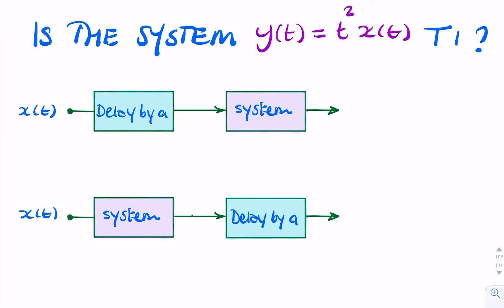So if x of t is delayed by a seconds, what we have as an output is x of t minus a. And if that then goes into my system, we can find the output by replacing all references to t with t minus a.